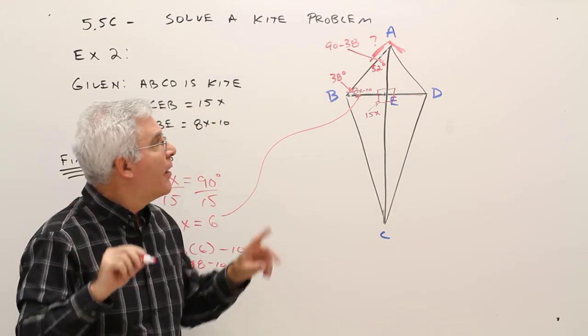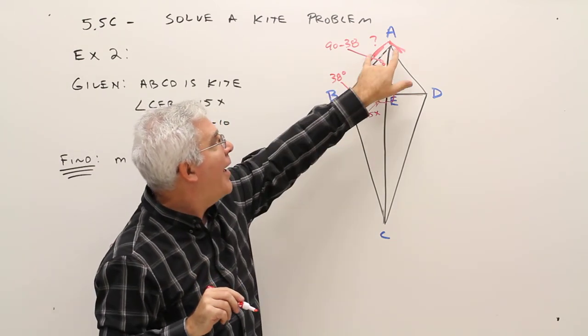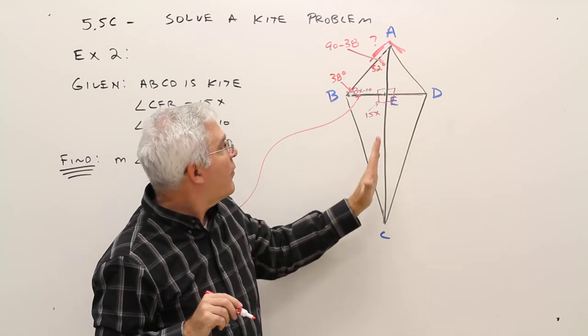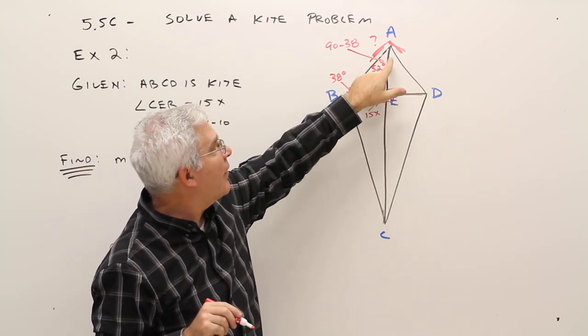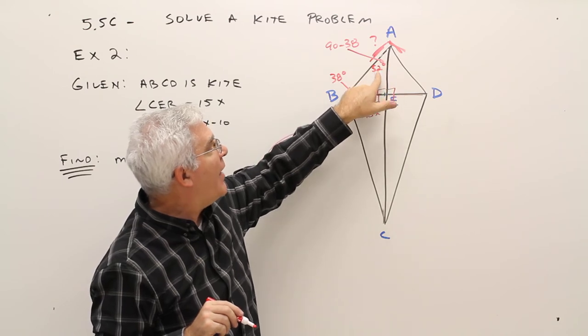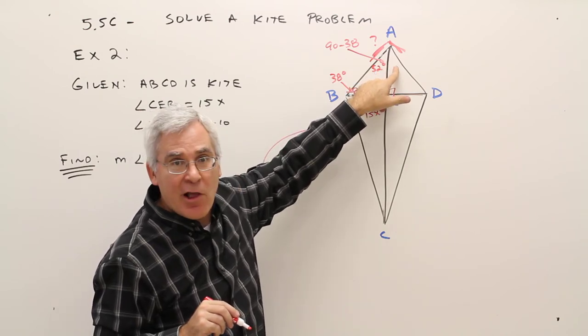However, I don't care about that angle. I care about that angle. So this diagonal is bisecting that angle there. So if that's 52, that's also 52.